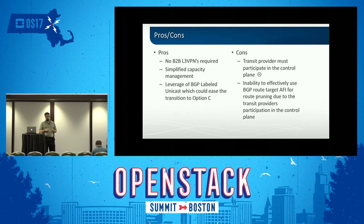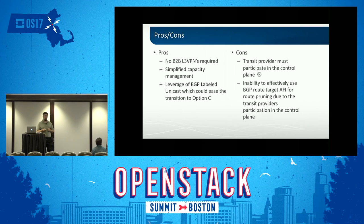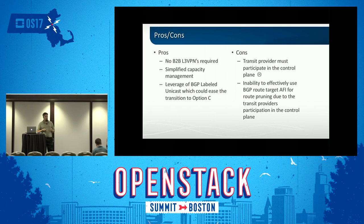Option B also removes the ability to use the route target address family. Normally BGP sends you all routes and you decide which to install. Route target address family flips that—you announce which routes you own, and peers reply requesting only the ones they want. This is valuable for carriers with hundreds of thousands of customer routes that should not be visible on transit routers—you only receive routes relevant to your L3 VPN termination points.